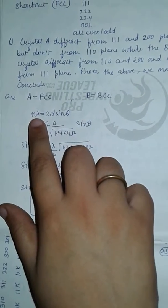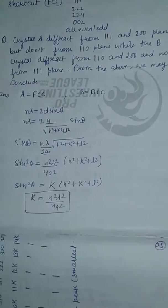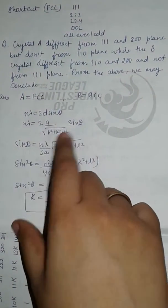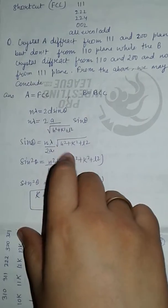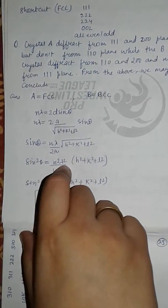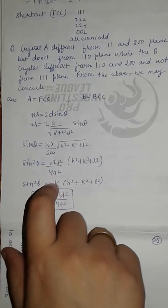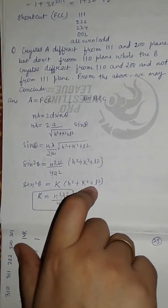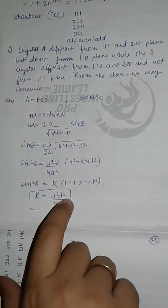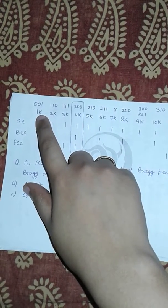Bragg's equation is n·lambda equals 2d·sin(theta). Since d equals a divided by the square root of (h² + k² + l²), rearranging gives sin(theta) equals n·lambda divided by 2a times the square root of (h² + k² + l²). Squaring both sides: sin²(theta) equals n²·lambda² divided by 4a² times (h² + k² + l²). Setting K equals n²·lambda² divided by 4a², we get sin²(theta) equals K times (h² + k² + l²).